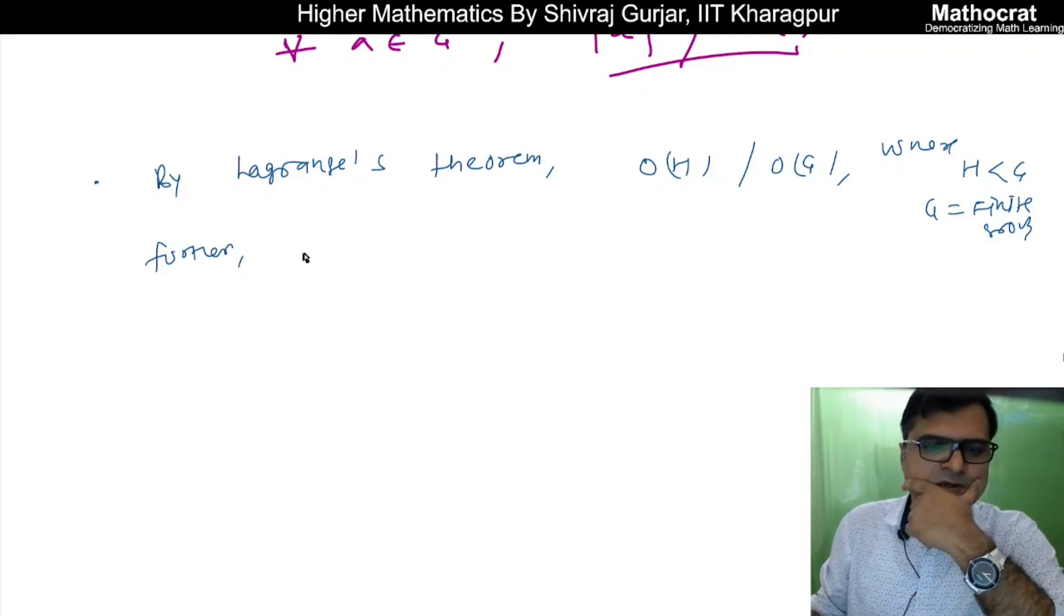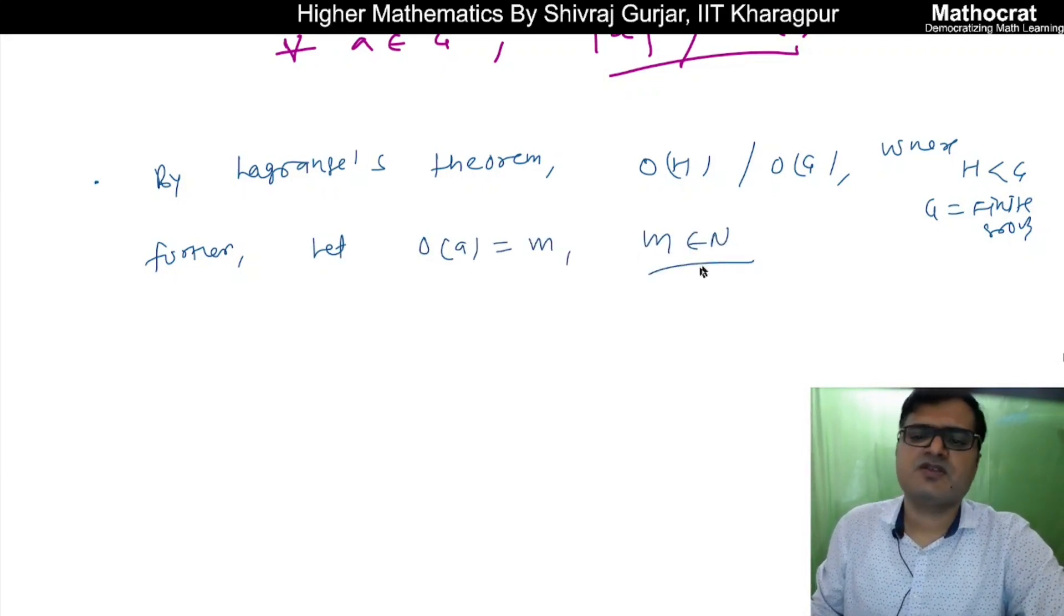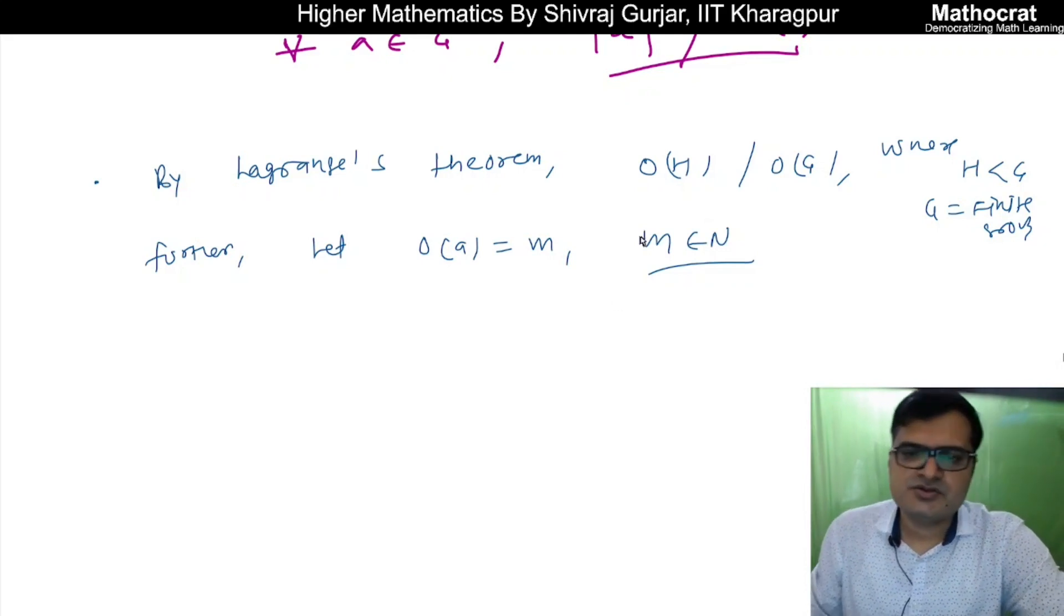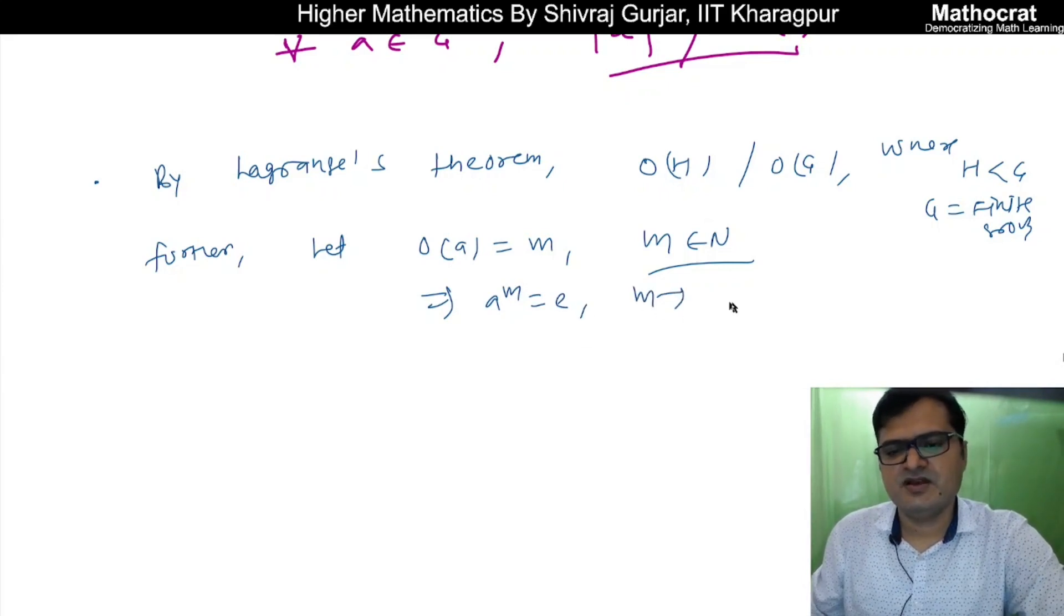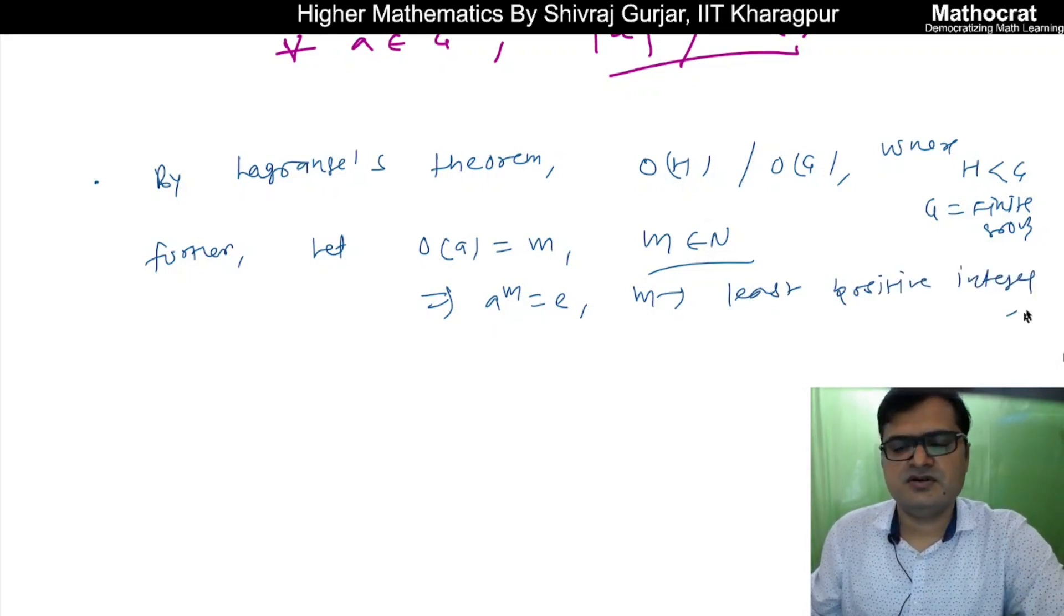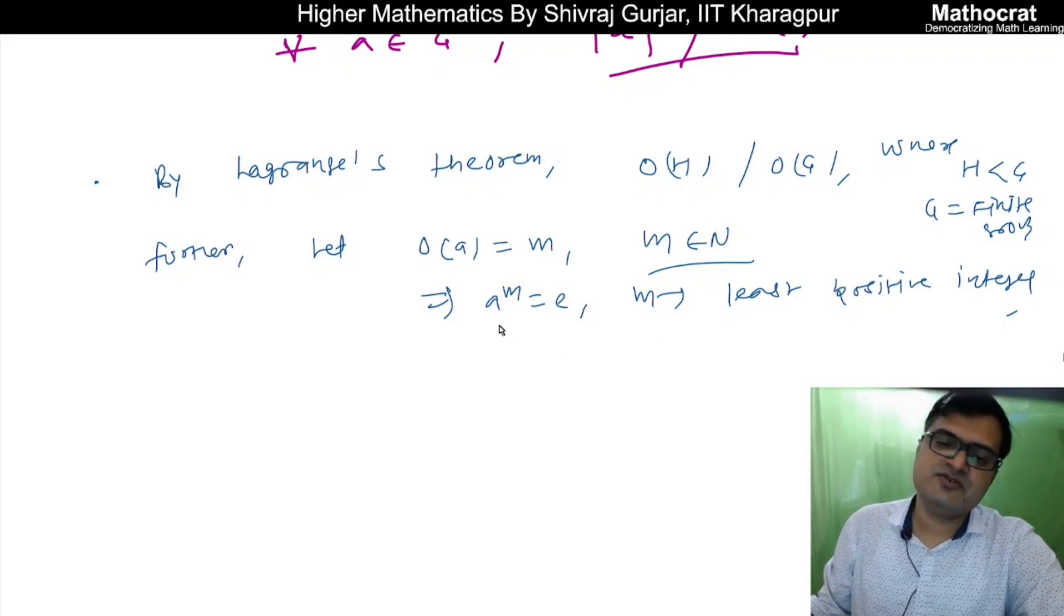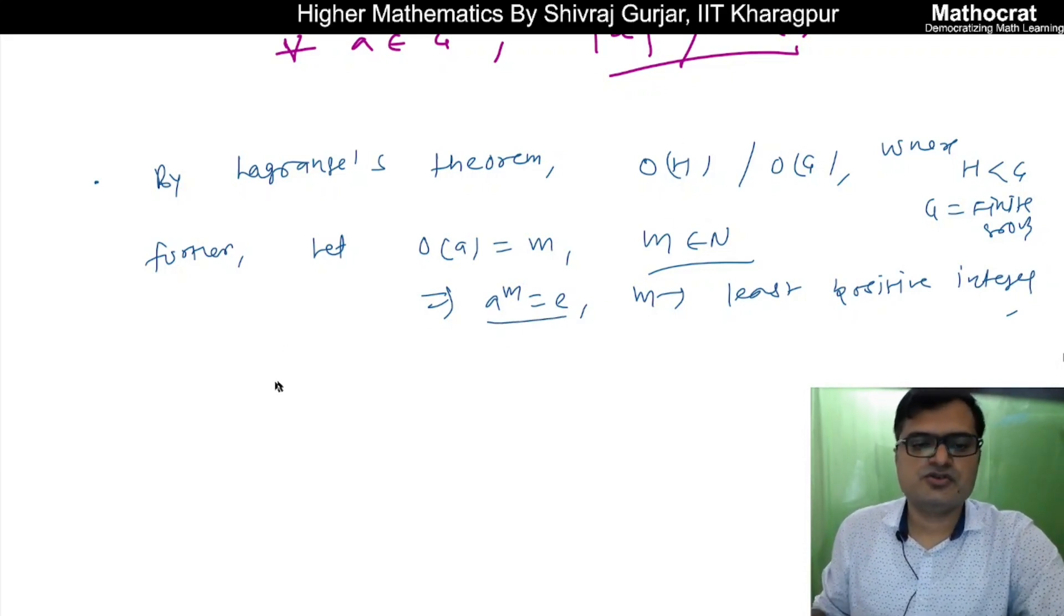By Lagrange's theorem, order of group H divides order of group G, where H is subgroup of G and G is of course finite group. Let order of A is equal to M, where M is some natural number.